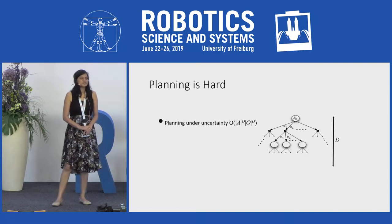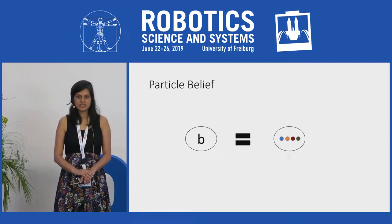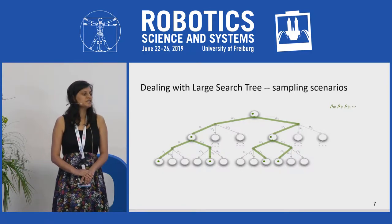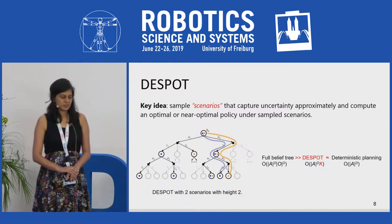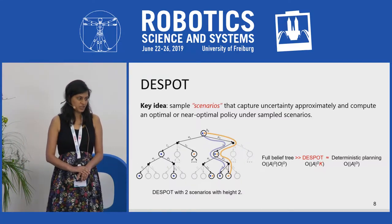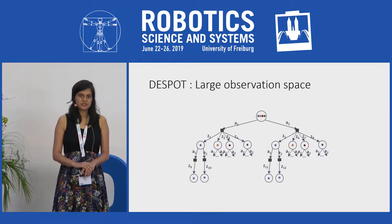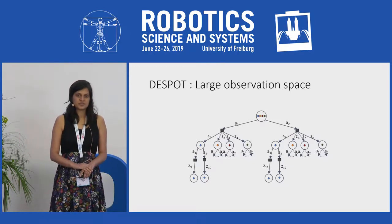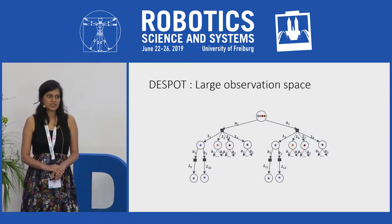Therefore, state-of-the-art POMDP solvers construct a sparse tree. For example, the DESPOT solver represents belief by a set of particles, and for each particle samples scenarios by determinizing the outcome of actions using a sequence of random numbers. A determinized and sparse tree captures uncertainty approximately and allows near-optimal policy computation. However, when observation space is large, a small number of scenarios do not capture the uncertainty well, as all the scenarios generate different observations. Because of this, there is only one particle to represent the belief after the first action, making the solver over-optimistic and unable to take information-gathering actions.